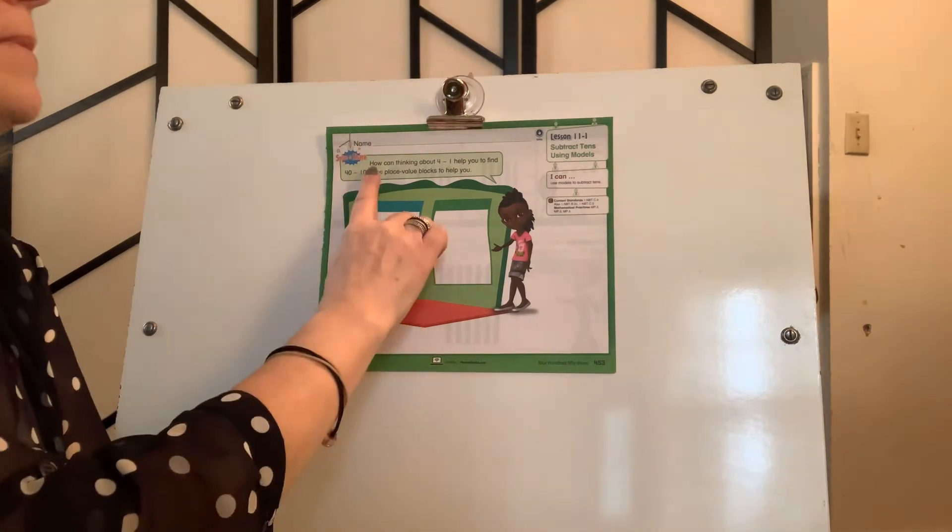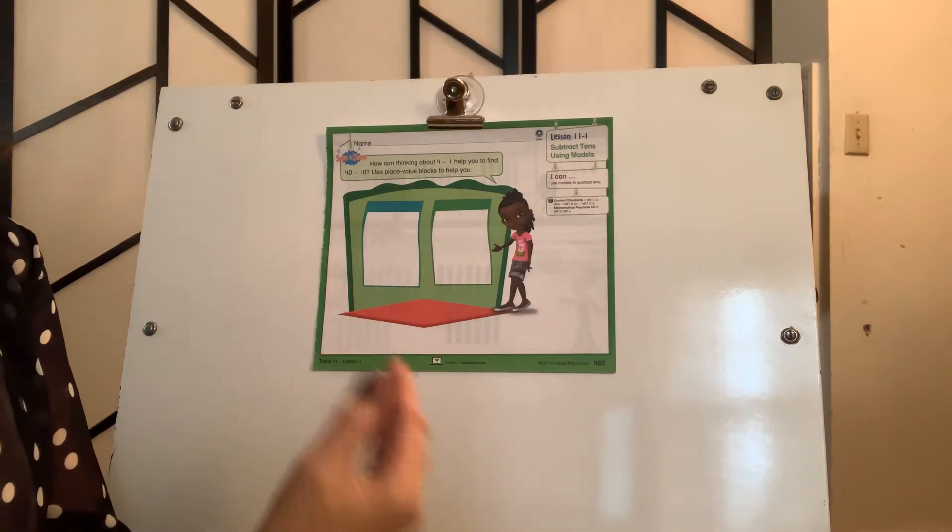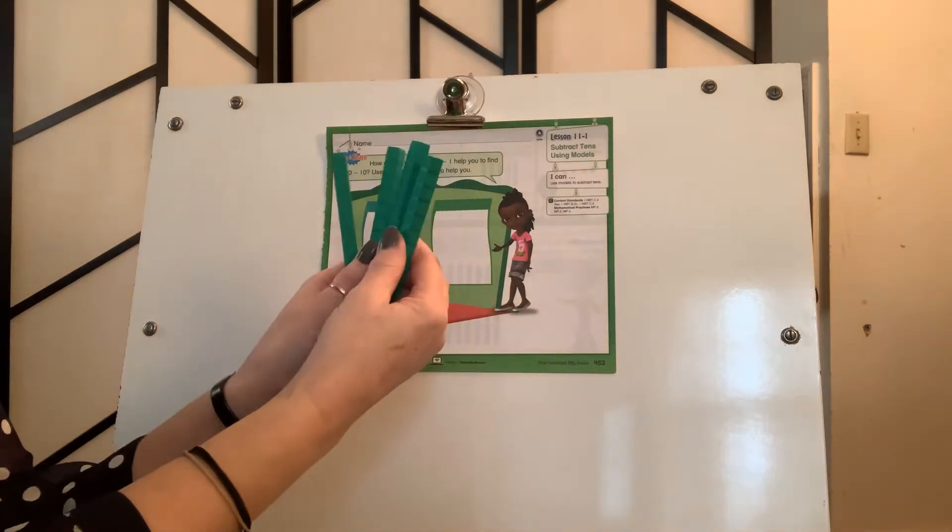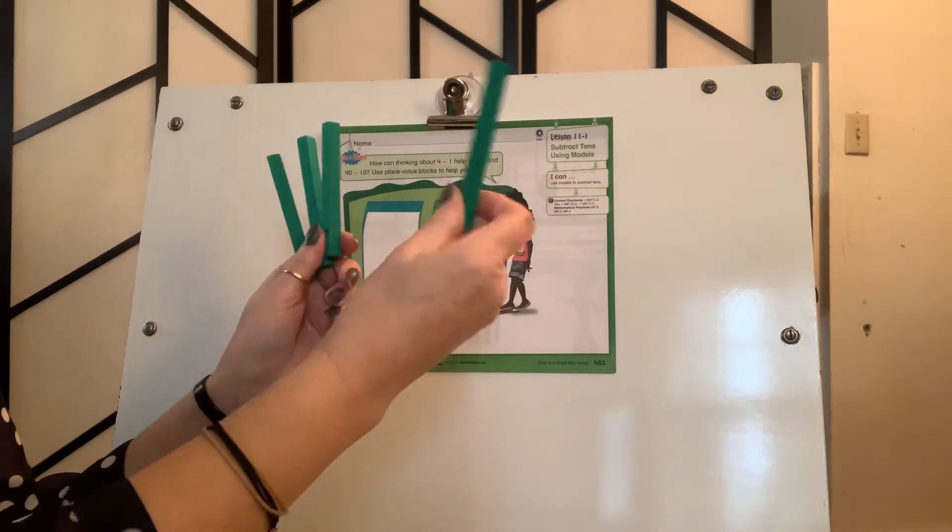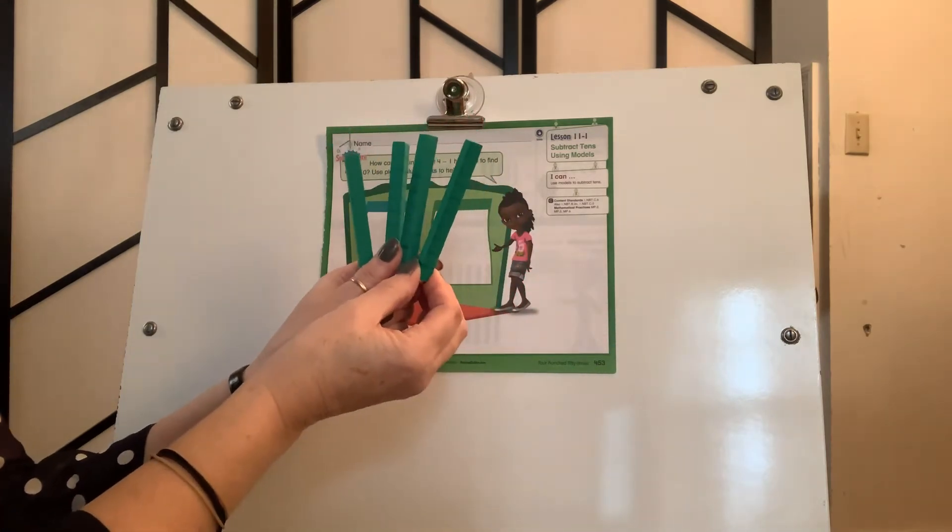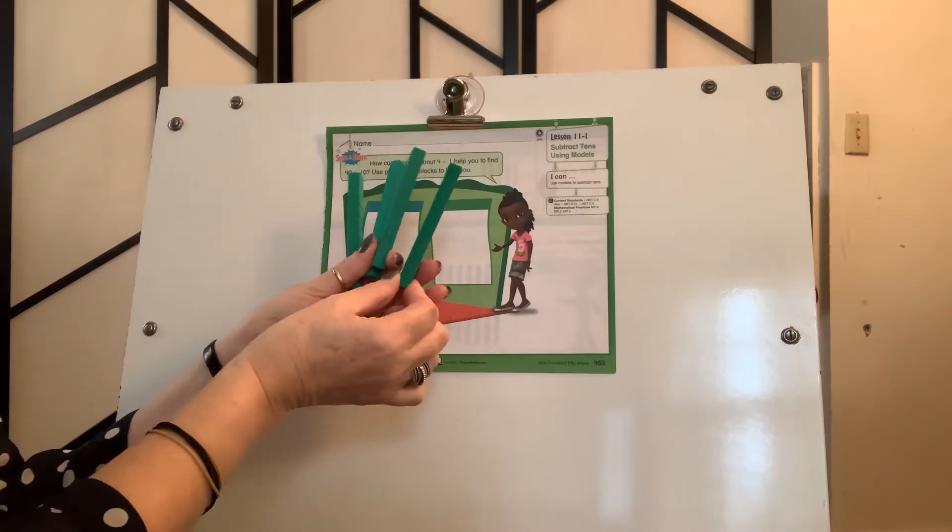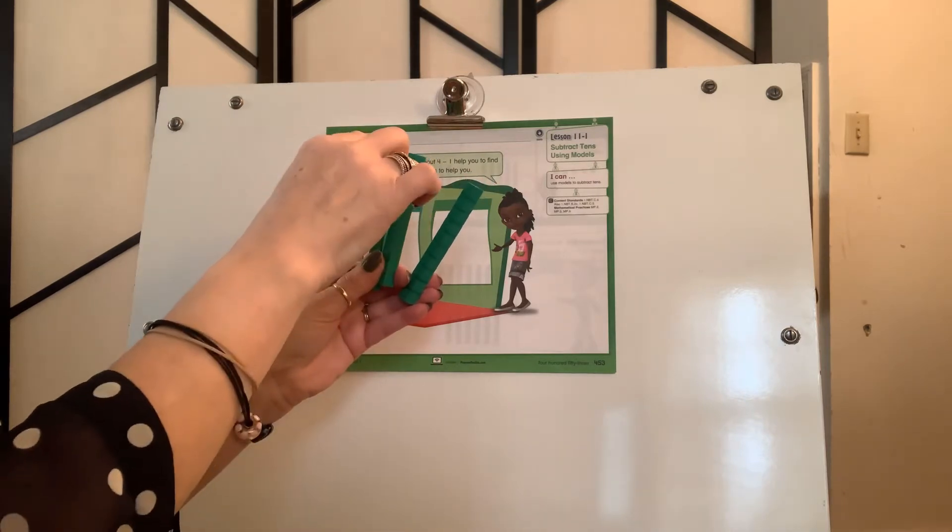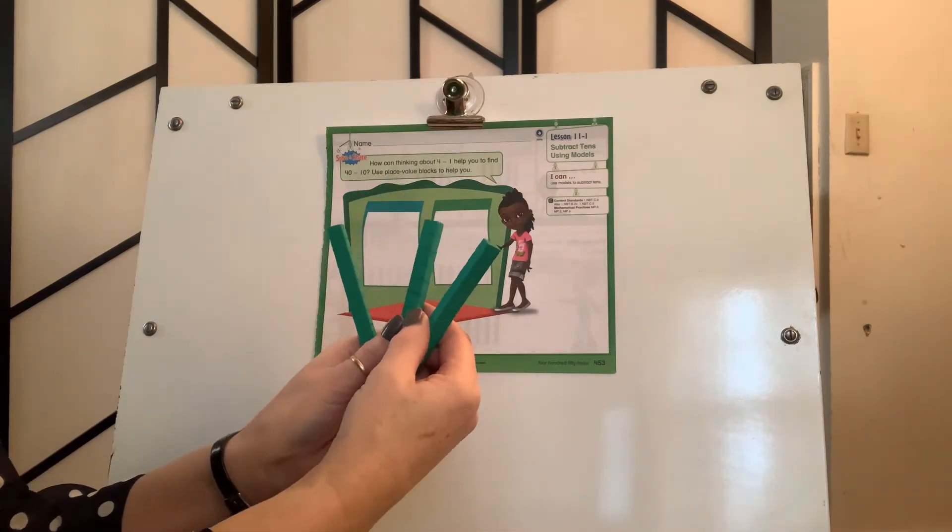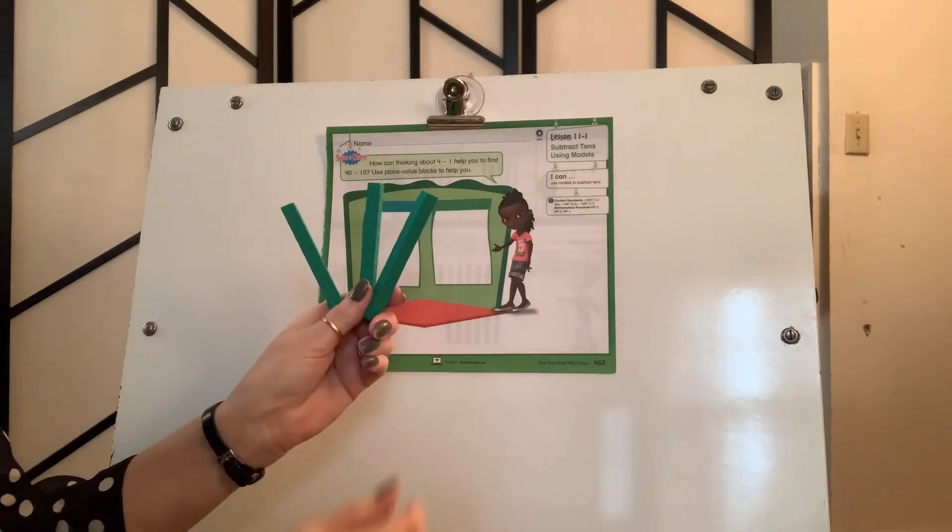I'm going to read the dialog box. How can thinking about 4 minus 1 help you to find 40 minus 10? Use place value blocks to help you. All right, I have four place value blocks. Now, remember, each long is worth 10. So, while I have 4 and I could take away 1, I also have the equation 40 minus 10. 10, 20, 30, 40. I'm going to remove 10. And how much do I have left? 10, 20, 30. Good job.